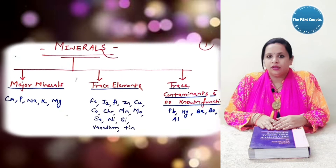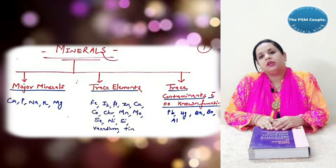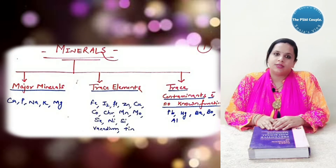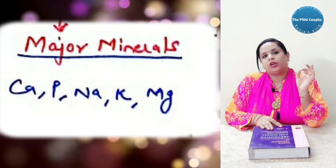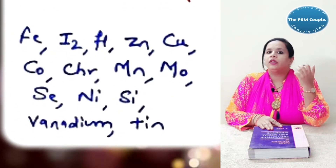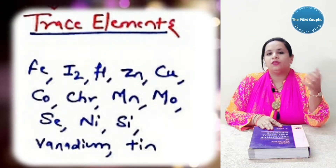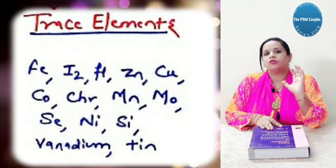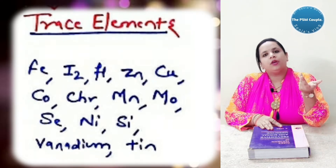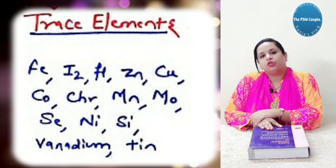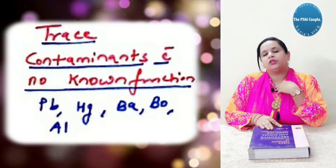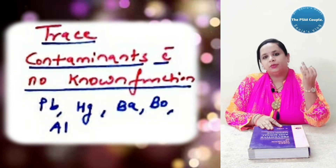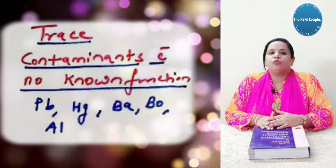Minerals are classified into three categories: major minerals, trace elements, and trace contaminants with no known functions. In the major minerals we have calcium, phosphorus, sodium, potassium and magnesium. In the trace elements we have iron, iodine, and fluorine, which are most common, and others include zinc, copper, chromium, manganese, etc. Trace contaminants with no known function include lead, mercury, barium and aluminium.